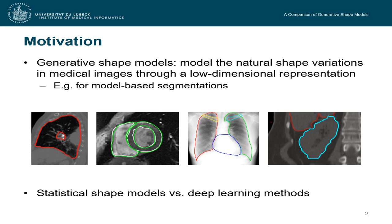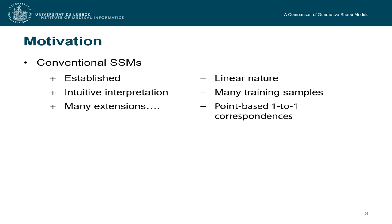Roughly said, there are two types of shape models, the conventional statistical shape models and deep learning methods. We do have some general knowledge about those methods. For example, the conventional statistical shape models have been around for a long time and they are already established and they have a very intuitive interpretation.